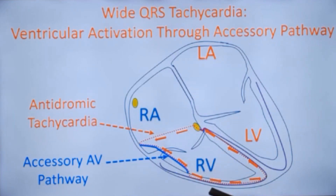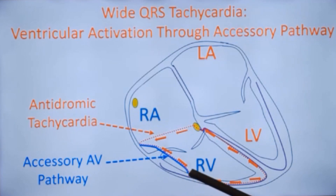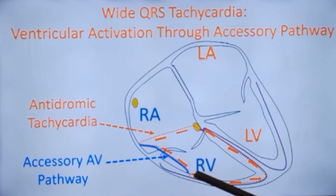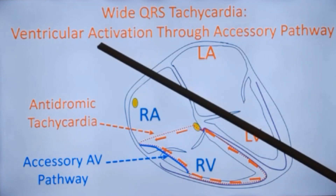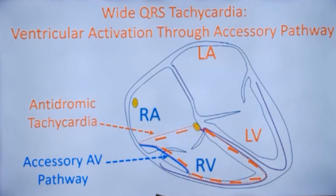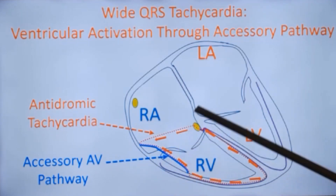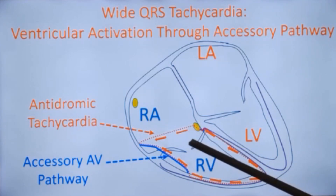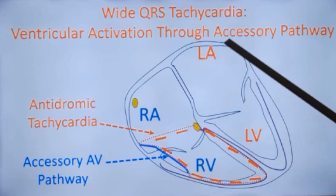In the emergency department, when a patient presents with antidromic tachycardia producing a wide QRS, there is no way to differentiate it from ventricular tachycardia. With hemodynamic compromise, the patient will be cardioverted with a direct current shock. After the shock, the ECG will reveal pre-excitation — short PR interval and delta wave. This is almost always a retrospective diagnosis for wide QRS tachycardia with ventricular activation through the accessory pathway. Antidromic tachycardia is much rarer than the orthodromic variety, accounting for about 10% of tachycardias in WPW syndrome.